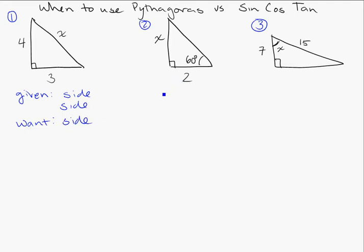How about question two? Here I've been given a side and an angle and I want a side. And for question three, I've been given side and a side. But what do I want? I want an angle.